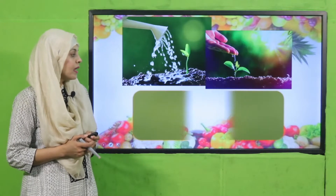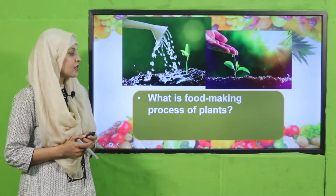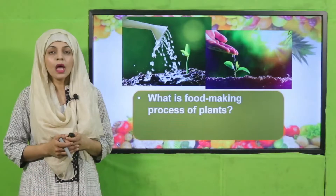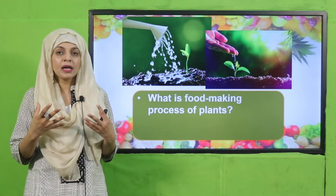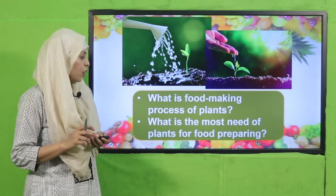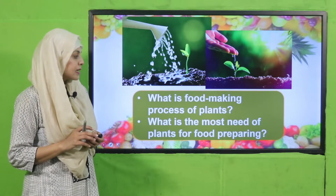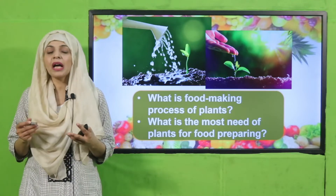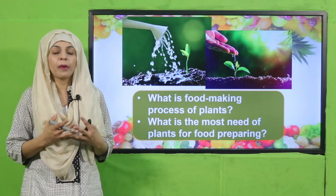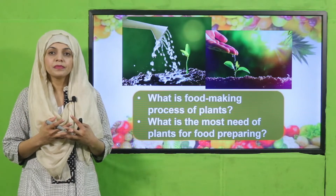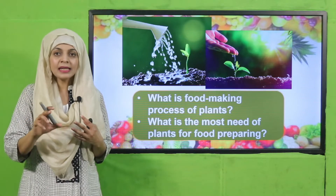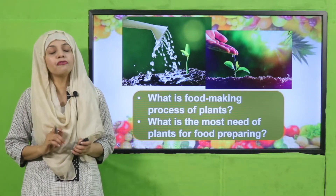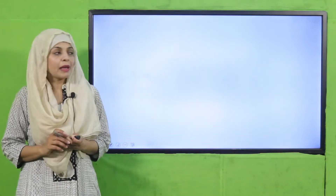Let's quickly recap the previous lecture. Listen to the questions carefully and answer them. What is the food-making process of plants? — That is photosynthesis. Very good. And what do plants mostly need for food preparation? — They need sunlight, air, and water. That's how they make their food.